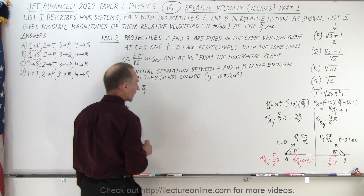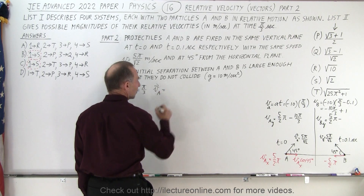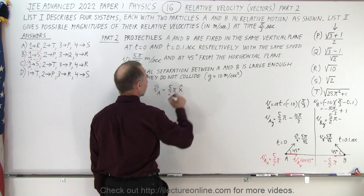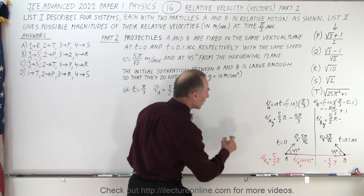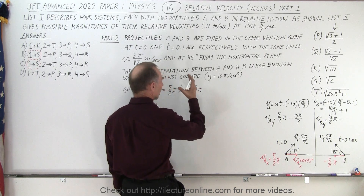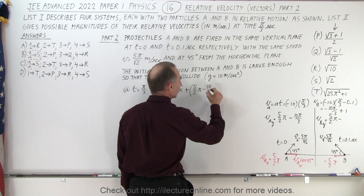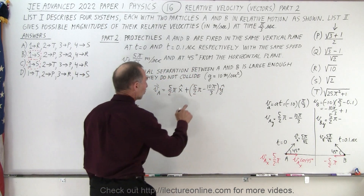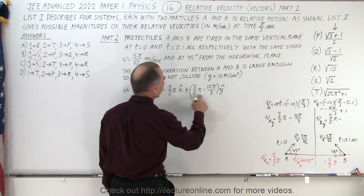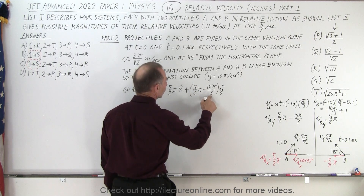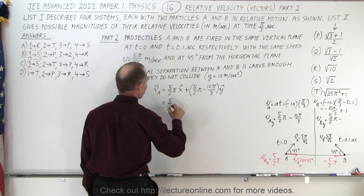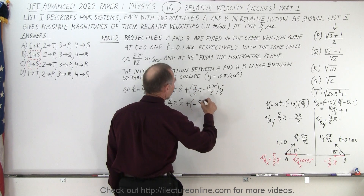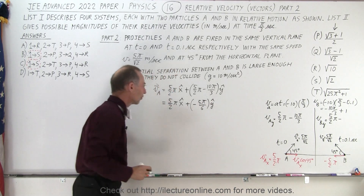At time π over 3, the velocity of A is: 5π over 2 in the x direction, plus in the y direction 5π over 2 minus 10π over 3. To simplify with a common denominator of 6: 15π over 6 minus 20π over 6 gives minus 5π over 6. So VA equals (5π/2) x-hat plus (−5π/6) y-hat. That is the velocity of particle A after π over 3 seconds.